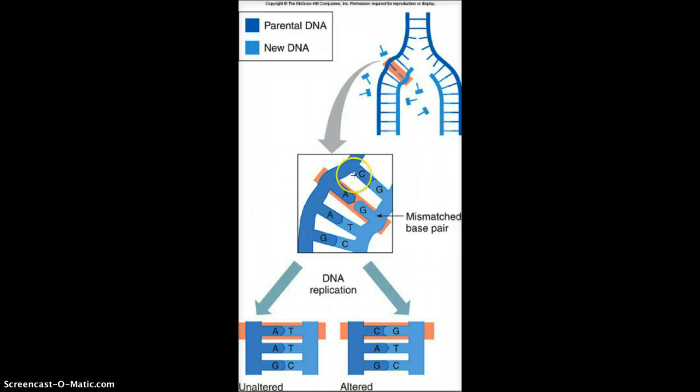And so if we zoom in, we can see what happens. So we should have A pairing with T, but instead, DNA polymerase accidentally added a G.